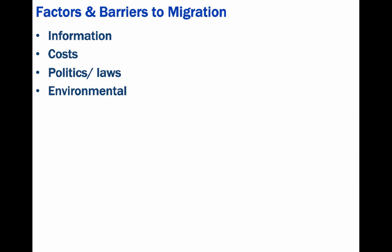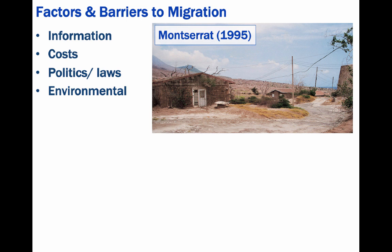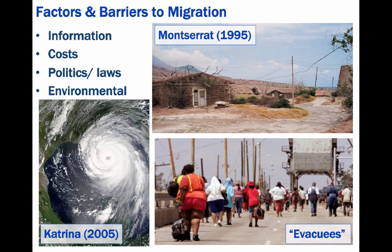Yet another cause or barrier to migration is environmental. In 1995, a volcano made the southern half of the island of Montserrat, including the capital city of Plymouth, uninhabitable. People who remained migrated to the north or to the United States. And in 2005, Hurricane Katrina swept through Louisiana. It was the costliest natural disaster in U.S. history, with total property damage estimated at over $80 billion, and hundreds of thousands of Americans left the region.